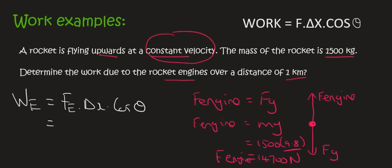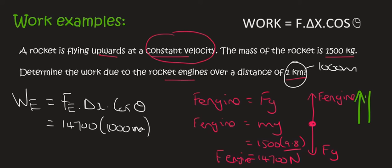And so the force of the engine is 14,700. The distance is 1 kilometer, but that's the same as 1,000 meters. Now, the SI unit for displacement or distance is meters. And then cos theta. So now, this rocket is busy moving upwards, and the engine is also exerting a force upwards. And so that's going to be cos of zero. And so the work due to this engine is going to be quite a big number. It's 14,700 with five zeros: 1, 2, 3, 4, 5. And that's going to be joules. So the engine is adding a lot of work to that rocket.